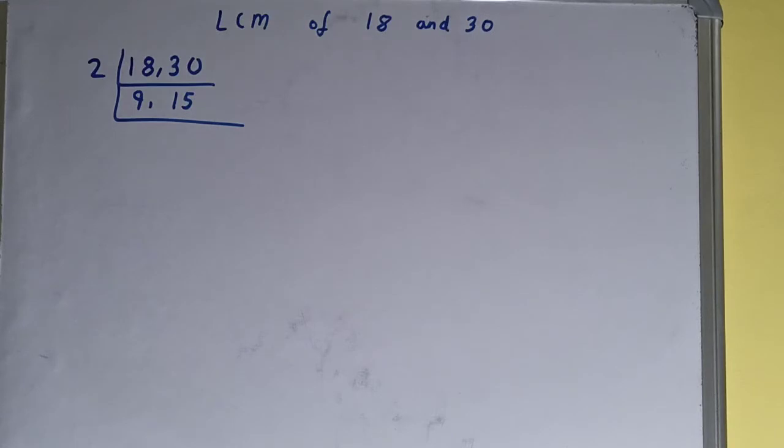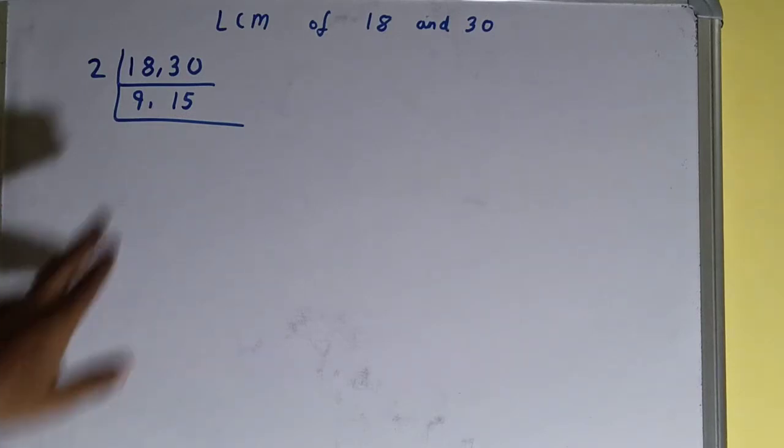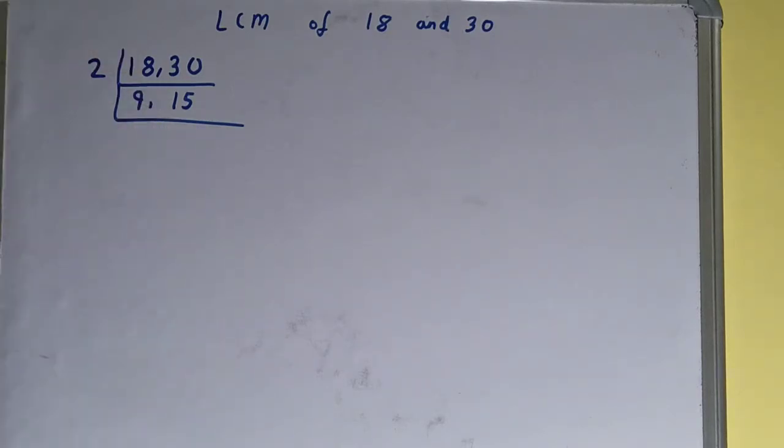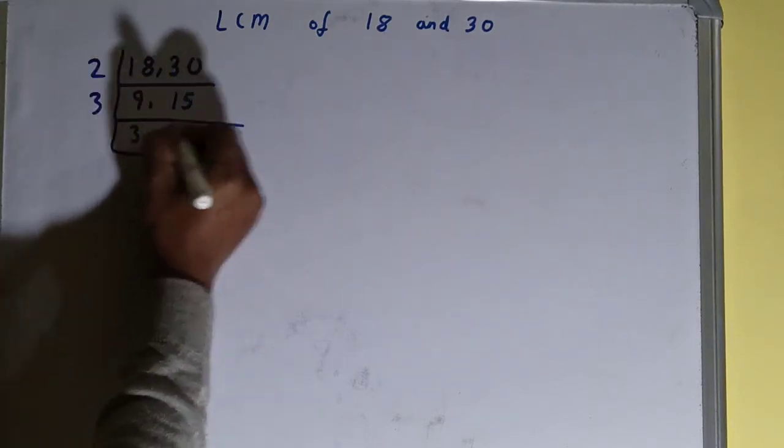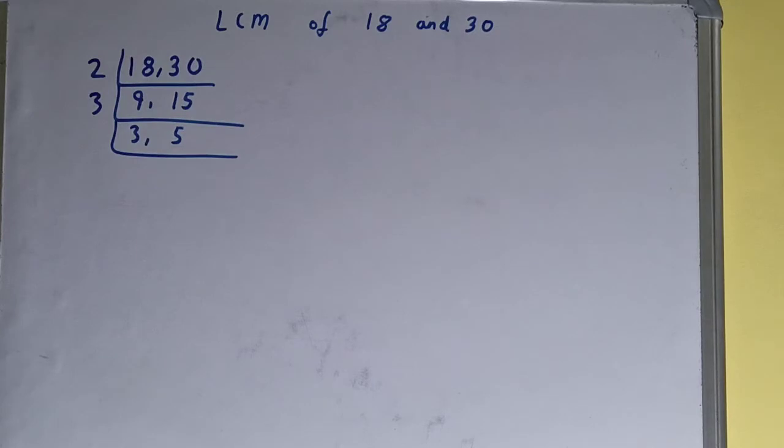Now again, we'll check: is any of the number divisible by 2? Then none of the numbers are divisible by 2, so we'll go to the next prime number, that is 3. And with 3, both the numbers are divisible, so we'll divide. And on dividing, we'll have this as 3 and this as 5.